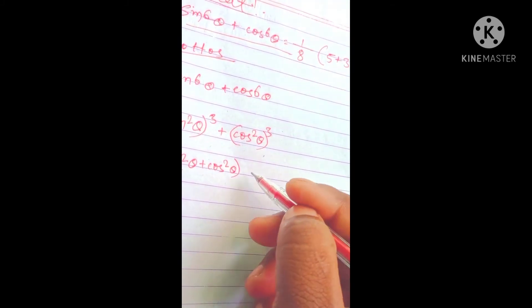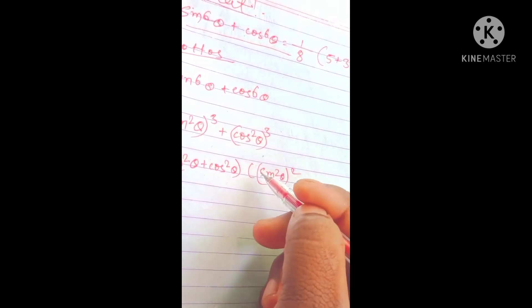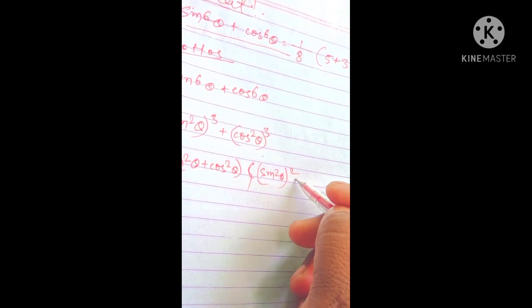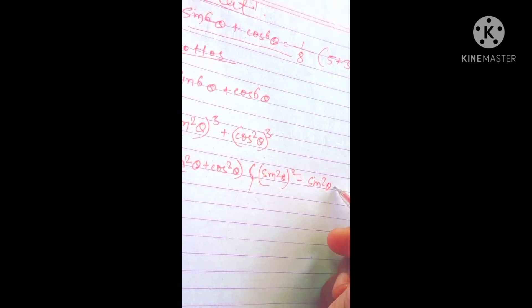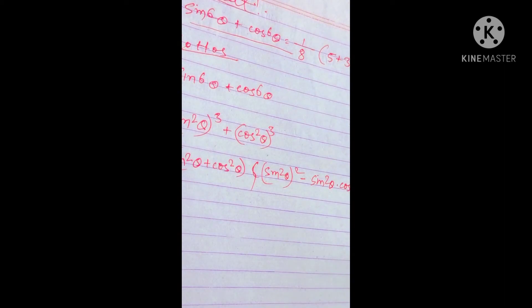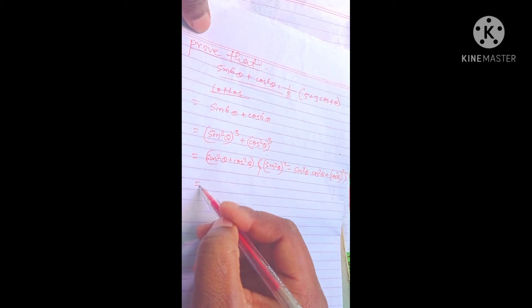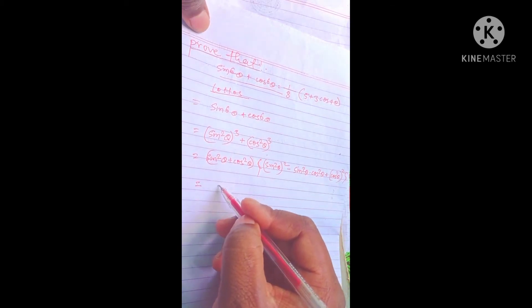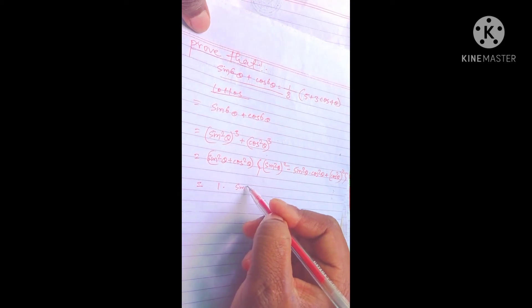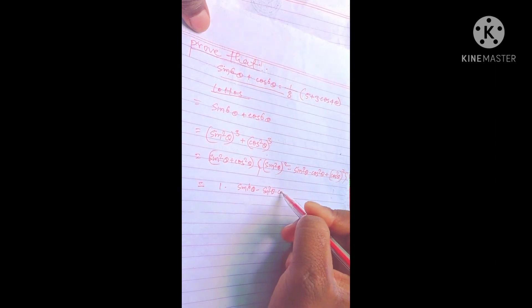Using curly bracket, sin²θ plus cos²θ, minus sin²θ multiplied by cos²θ. Then sin²θ into cos²θ plus cos²θ, applying the identity expansion.